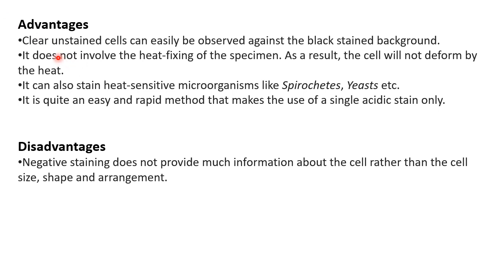The advantages of negative staining: first, you get clear unstained cells for proper observation against a black stained background. It does not involve heat fixing of the specimen, so cells will not deform due to heating. It can also stain heat-sensitive microorganisms such as spirochetes or yeast. It is an easy and rapid method — just one dye is used, you air dry, you don't need to wash or decolorize.